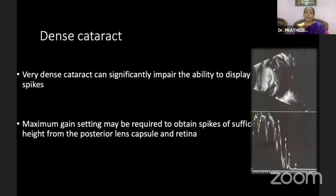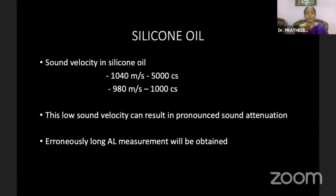When dealing with a very dense cataract, sound waves may have difficulty penetrating, resulting in poor quality spikes — increase the gain settings. When dealing with a silicon oil-filled eye, the mode must be changed to silicon oil mode because sound waves travel slower in silicon oil. This can cause pronounced sound attenuation and erroneously give a falsely long axial length, affecting IOL power calculation.